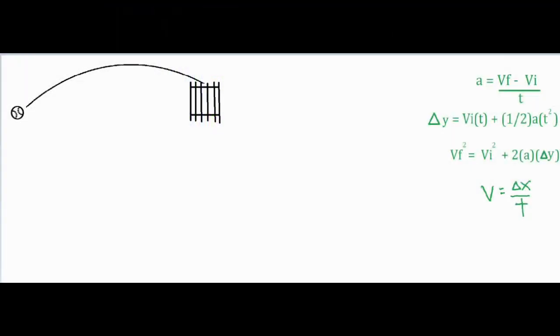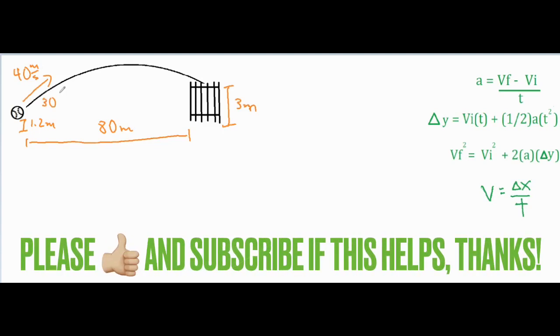In this video, I'm going to be working on a projectile problem where a baseball is struck 1.2 meters off the ground. We are going to do some calculations to see if it clears a three meter fence that is located 80 meters from its starting position. The ball is struck initially with a speed of 40 meters per second, angled 30 degrees above the horizontal.